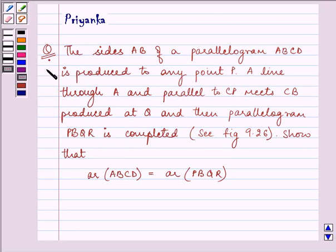Hi and how are you all today? The question says the side AB of a parallelogram ABCD is produced to any point P. A line through A and parallel to CP meets CB produced at Q.